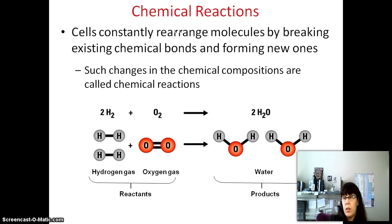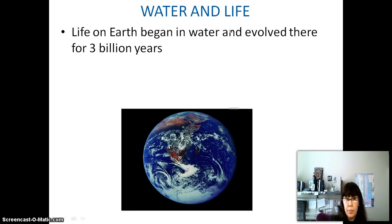Within your cells, you have lots of chemical reactions, and the cells are constantly rearranging molecules by breaking chemical bonds and forming new ones. For example, hydrogen gas and oxygen gas can rearrange themselves, breaking the bonds and reforming new bonds. I'm going to stop this section here, and I will start another cast with the section on water and life, because I'm going to run out of time otherwise. So let's start the new one.